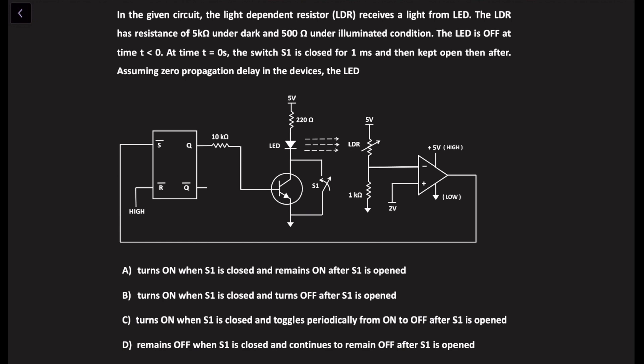Here, this LDR or light-dependent resistor receives light from the LED. Under dark conditions, the resistance of the LDR is equal to 5 kilo-ohm, while under illumination its resistance is equal to 5 ohm. This LED is in the OFF condition for time t less than 0. At time t equals 0, switch S1 is closed for 1 millisecond, and after 1 millisecond, S1 is opened again. We are asked to find the condition of the LED when S1 is closed and when it is opened.